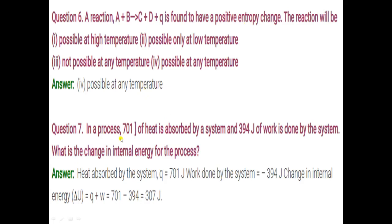Question number 7: in a process, 701 joule of heat is absorbed by the system. So the value of Q is 701 — heat is given by the surroundings and absorbed by the system, so for the system heat is positive. Here, 394 joule of work is done by the system, so this work will be negative. We will put the values in the formula: ΔU = Q + W, and get the answer.